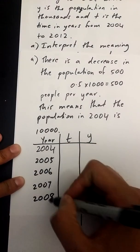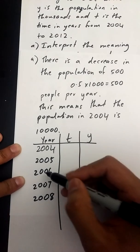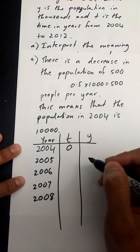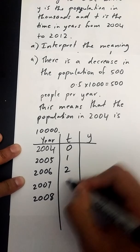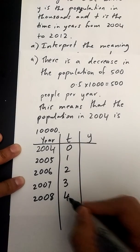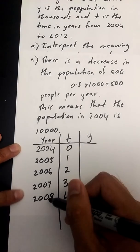That is my fifth year right there, my first, second, third, fourth, fifth. Remember your t always starts at 0, 1, 2, 3, 4. So my t is 4 for my fifth year.